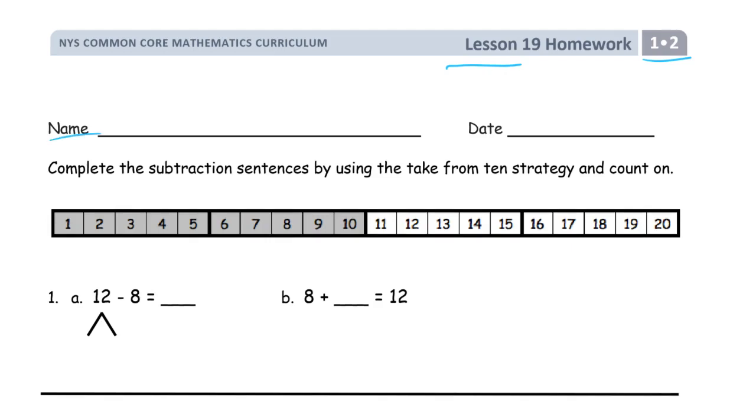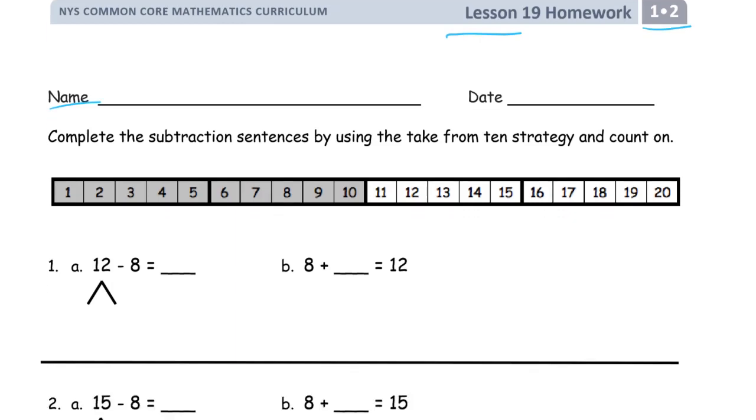It says complete the subtraction sentences by using the take from 10 strategy and count on. So where you see the number bonds, that's where we're going to take from 10. And then here where it says 8 plus, we're going to count on from one part to see how many it takes to get to the whole.